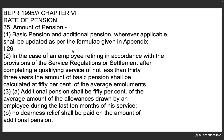Basic Pension and Additional Pension, wherever applicable, shall be updated as per the formula given in Appendix 1.26. In the case of an employee returning in accordance with the provisions of the service regulation or settlement after completing qualifying service of not less than 33 years, the amount of basic pension shall be calculated at 50% of the average emoluments drawn by an employee during the last month of service. No DA shall be paid on the amount of additional pension.